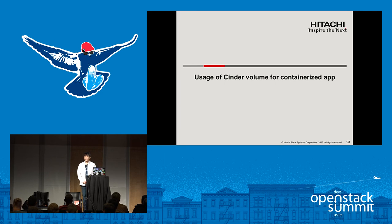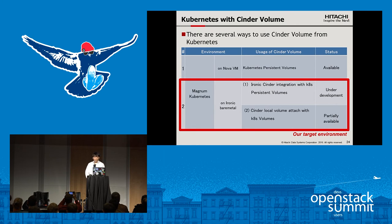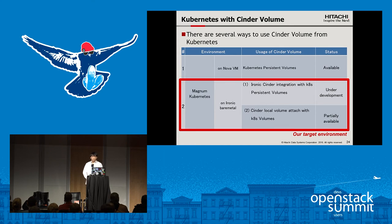I'd like to explain the usage of Cinder volume for containerized applications. There are several ways to use Cinder volumes from Kubernetes. The first is Magnum Kubernetes running on a Nova VM — in this case, users can use Kubernetes persistent volumes for Cinder, and this functionality is already available. If Magnum Kubernetes is running on Ironic bare metal, there are two ways to use Cinder volumes.